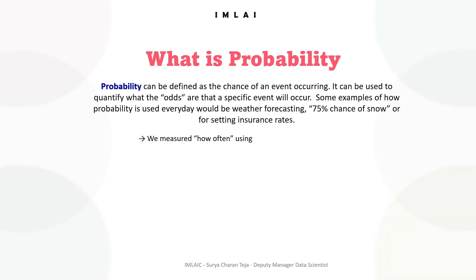Probability theory is a branch of mathematics that deals with the study of random events or phenomena. Probability can be defined as the chance of an event occurring. It can be used to quantify what the odds are that a specific event will occur.